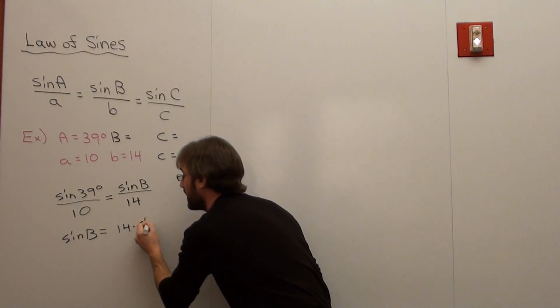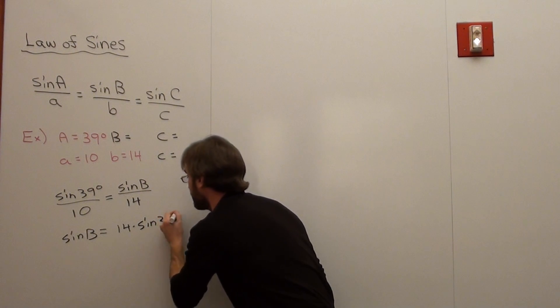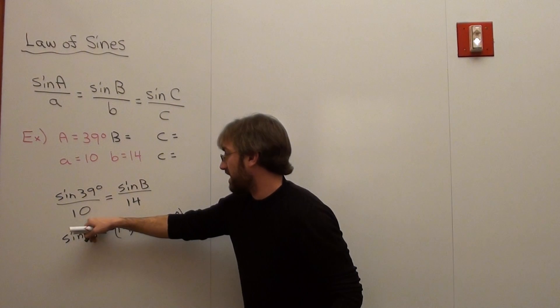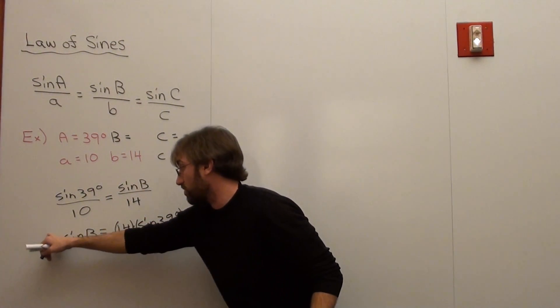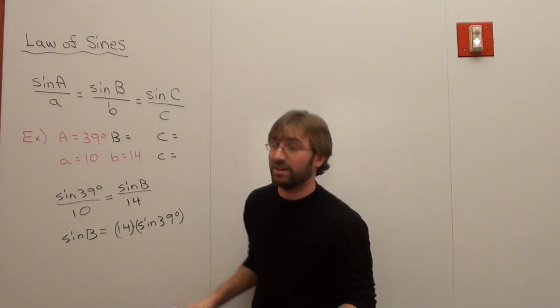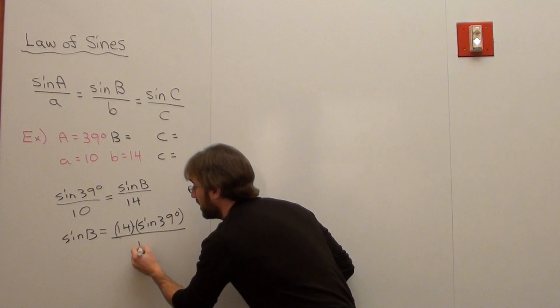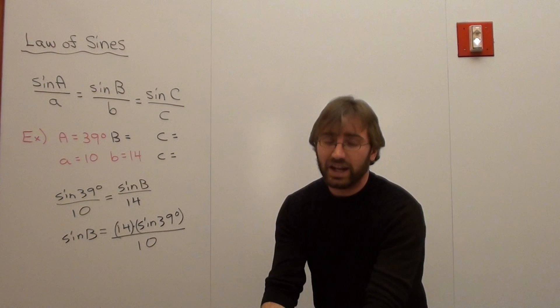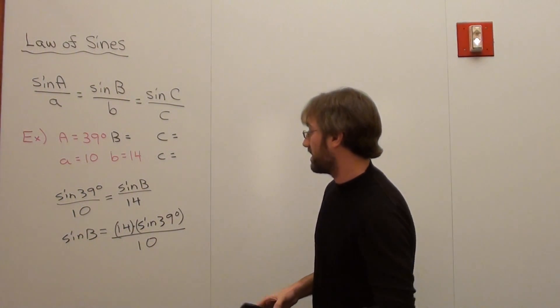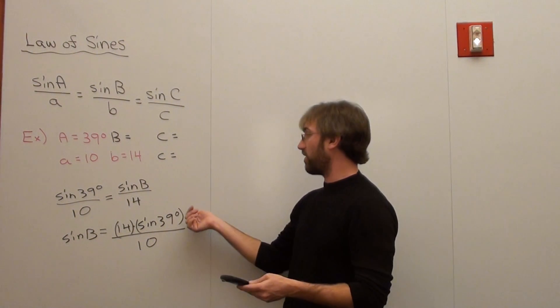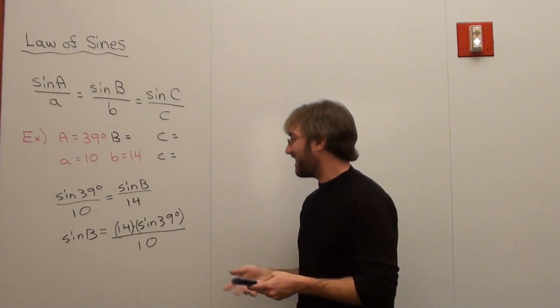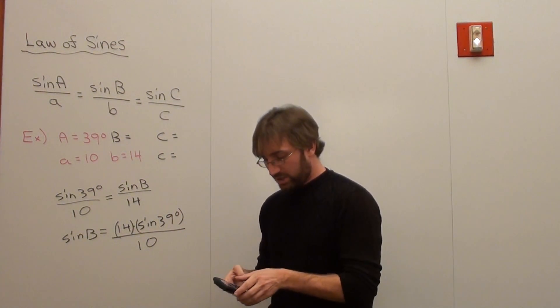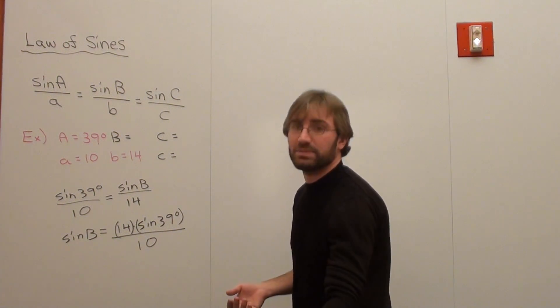So it's 14 times sine of 39 degrees. And then we're going to get 10 times the sine of B. And there's a 10 here, but we're going to divide 10 on both sides. So actually the sine of B is all this: 14 times sine of 39 divided by 10. And I'm going to divide by 10. When I do that, I get 0.88, approximately 0.88.